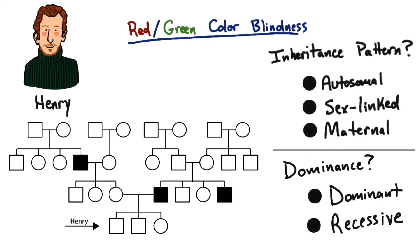If you have trouble answering this question, it's probably because you need to go back to lesson five for a refresher, where we learned about pedigrees and dominance for the first time.